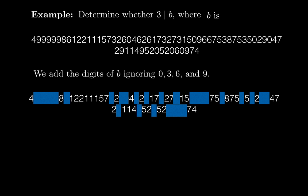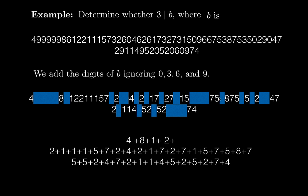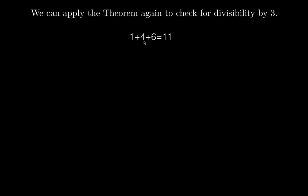After ignoring 0, 3, 6, and 9, we are left with digits 4, 8, 1, 2, 2, 1, 1, 1. Adding all of these gives 146. If unsure whether 146 is divisible by 3, apply the theorem again. I can ignore the 6, so add 1 plus 4, giving 5. Since 5 is not divisible by 3, the conclusion is that 3 does not divide B. This improved criterion lets you use fewer digits when your number contains 0, 3, 6, or 9.